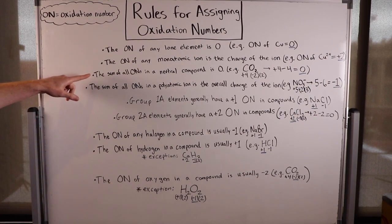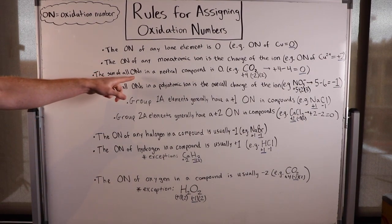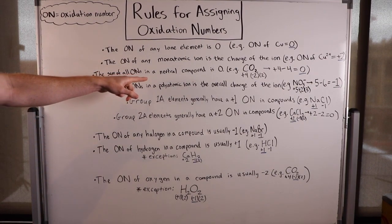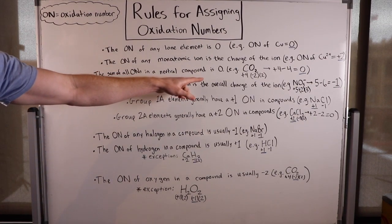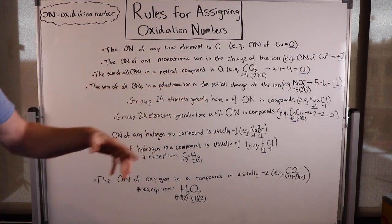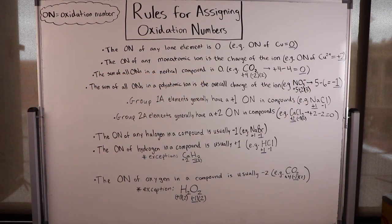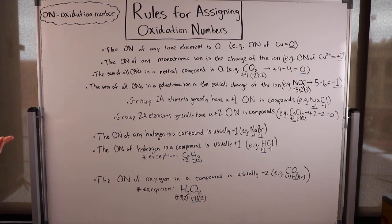Then the sum of all oxidation numbers in a neutral compound is zero. That makes sense: if the overall compound has a charge of zero, all the oxidation numbers in the atoms that make up that compound must add up to zero.